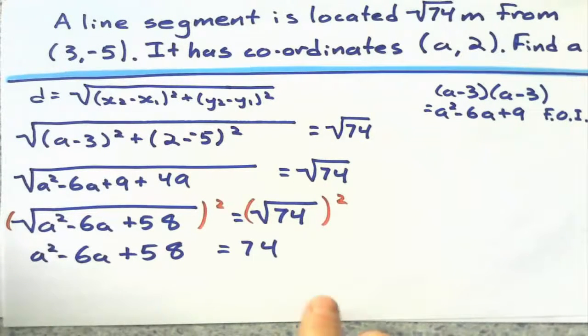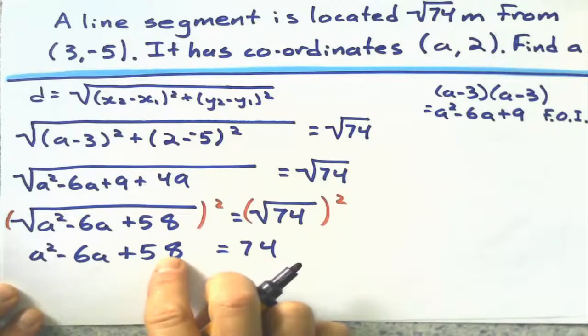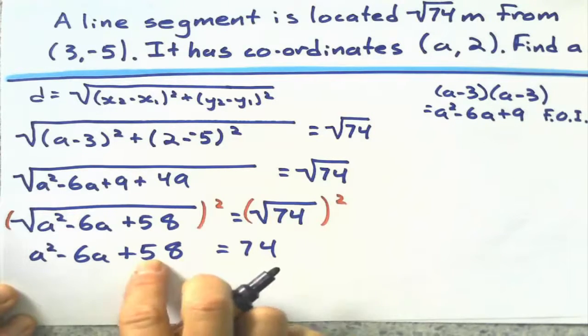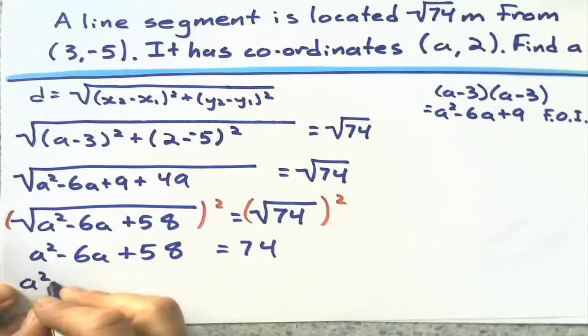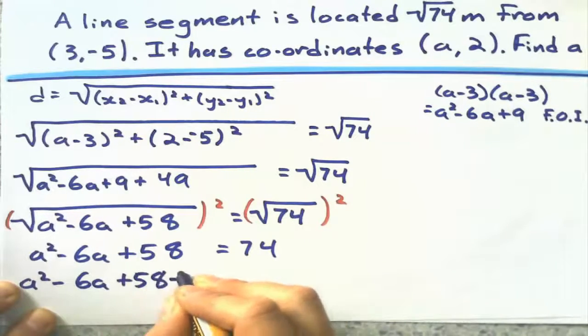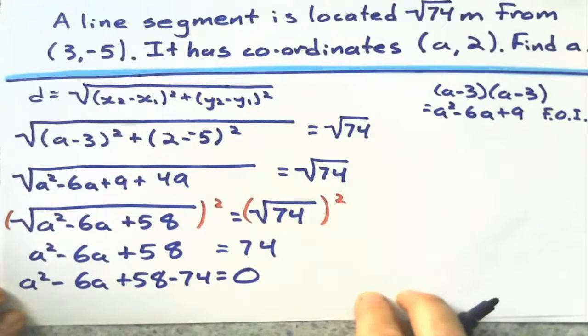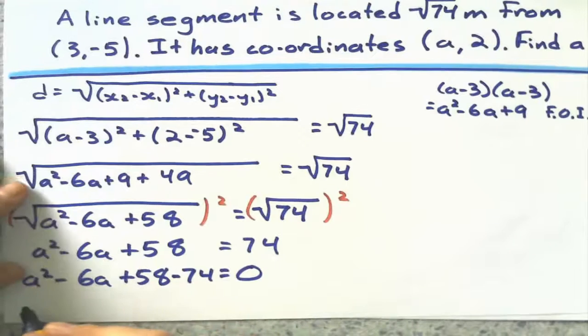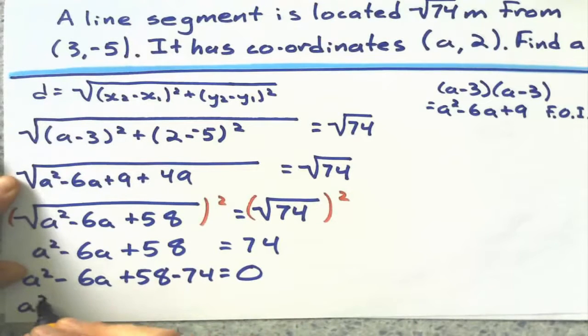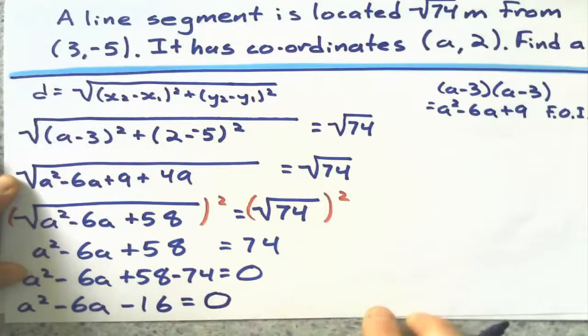And from here, it's almost easy street. So, for solving a quadratic, set it equal to 0. And let's see if it factorizes. Set it equal to 0. So, a squared minus 6a plus 58 minus 74 gives me 0. And 58 minus 74. A squared minus 6a. 58 minus 74 gives me minus 16 equals 0.